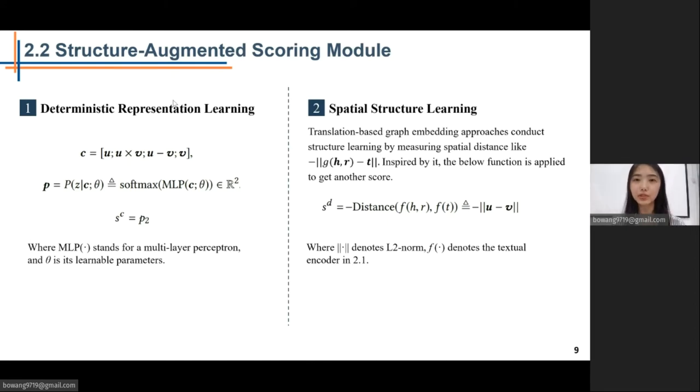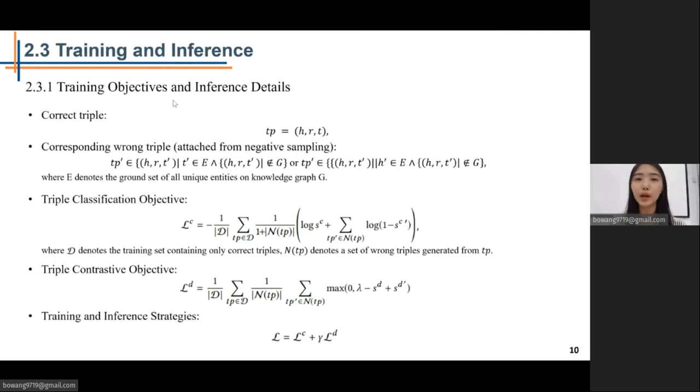Then a two-way classifier is applied to C and produces a two-dimensional categorical distribution corresponding to the negative and positive probabilities respectively. The second dimension of P can serve as the score of the input triple to perform candidate ranking. The second one is spatial structure learning. Inspired by the structure learning conducted in translation-based graph embedding, we measure the spatial distance between U and V to get another score. Corresponding to the two kinds of scores, we have two training objectives. Formally, the correct triple and corresponding wrong triple are denoted as TP and TP prime. On the one hand, we implement the binary cross-entropy loss to train the encoder based on SD. On the other hand, given the distance based on SD, we also train the encoder by using a contrastive objective. Finally, the loss to train the STAR is the weighted sum of the two losses.